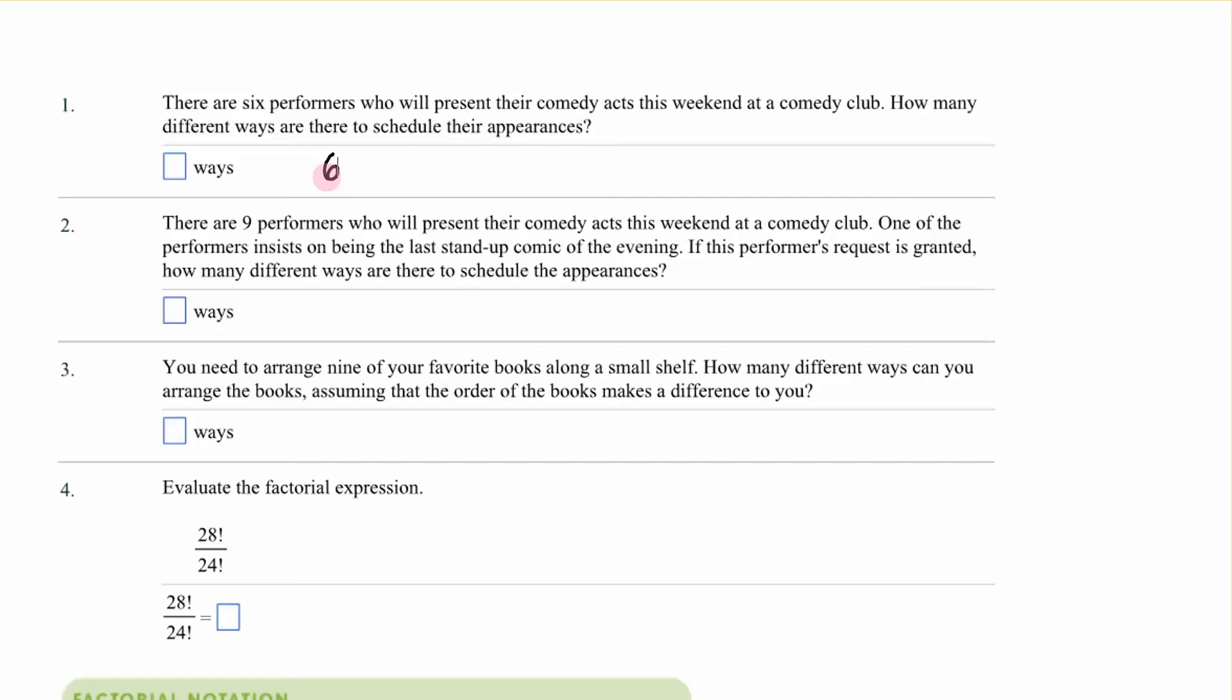For the second place, there are only five left. So there are only five ways to get the second spot filled. Then there are four for the third, three for the fourth, two for the fifth, and there will be only one person left to fill that sixth spot. If you multiply those, you will get 720.